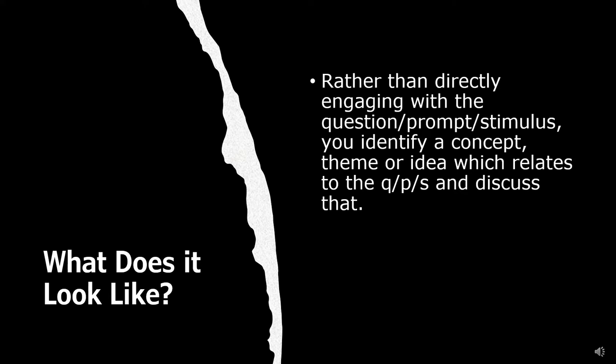So what does it look like? Rather than engaging directly with the question prompt stimulus, you identify a concept, theme, or idea which relates to the question prompt stimulus, and you discuss that related theme or idea or concept. Given that 'discursive' is a nominalisation of the word 'discuss', obviously for your concept, theme, or idea you will need at least two points which show different sides. They don't necessarily have to be for and against — as far as NESA is concerned, it's probably better if it's not for and against.